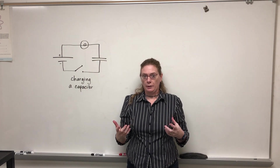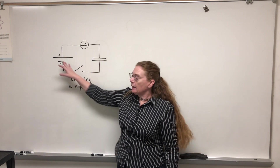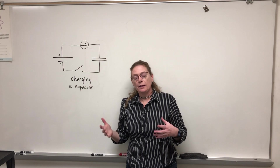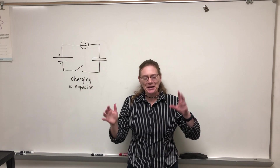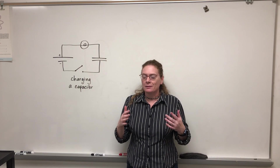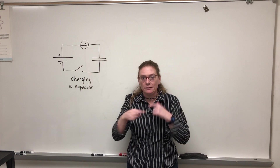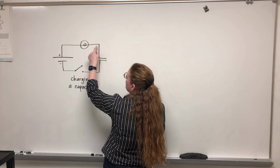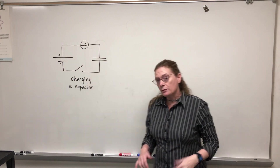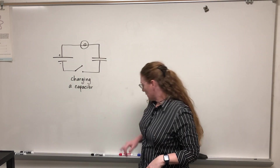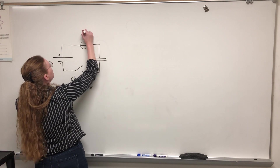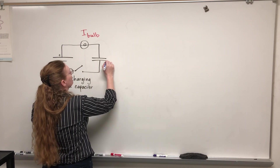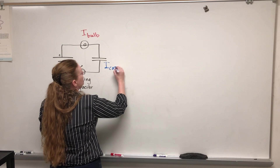Let's think about current to start with. This is a series circuit, and in a series circuit the current has to be equal at all points, because current is just the count of how many charges are going by per second. So if there are six million charges per second here, there had better be the same amount at every other point. This counts as a series circuit, so the current through the bulb and the current through the capacitor need to be the same.